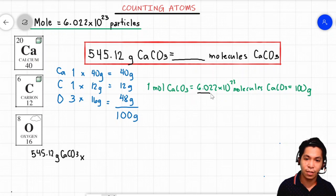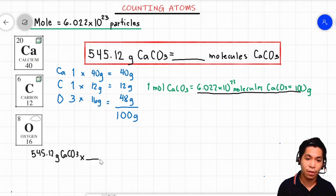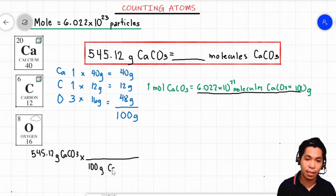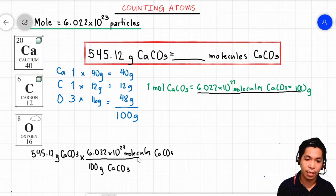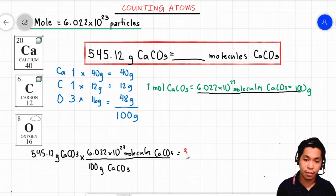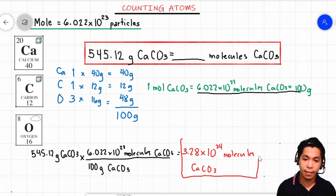We have 545.12 grams of CaCO3. Multiply that using our conversion factor. Since our concern is molecules and mass, we write 100 grams of CaCO3 in the denominator and 6.022 times 10 to the 23rd molecules of CaCO3 in the numerator. Solving: 545.12 times Avogadro's number divided by 100 gives an answer of 3.28 times 10 to the 24th molecules of CaCO3. And you have arrived at the final answer.